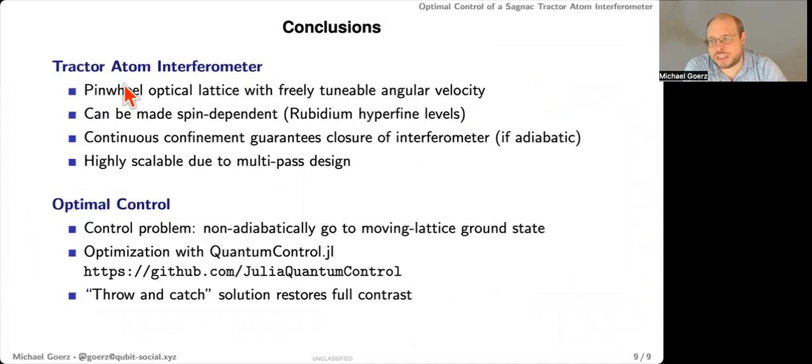So to conclude, I showed you the design of a tractor atom interferometer that uses a pinwheel optical lattice with freely tunable angular velocities. And you can make that spin-dependent for different hyperfine levels of a rubidium atom. And the big benefit that gives you is you have continuous confinement that really guarantees closure of the interferometer, assuming that you're adiabatic. And that also makes it highly scalable, because now you can just do more or less as many passes as you'd like to get to high precision. But if you're not adiabatic, then you start running into problems. And I showed you how to use optimal control to counteract that, as you can define a control problem of non-adiabatically moving to the ground state of the moving lattice. And we're doing that optimization with this Julia package here. And as you just saw, you get this kind of throw-and-catch solution that really restores you the full contrast. Thank you.